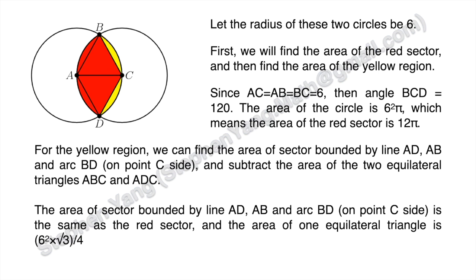The area of the sector bounded by AD, AB, and arc BD on the C side equals the red sector. The area of one equilateral triangle is 6 squared times square root of 3 divided by 4. So the area of the yellow region is 12 pi minus 18 times square root of 3.